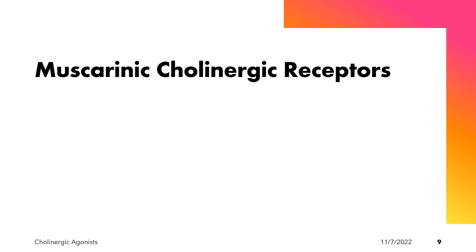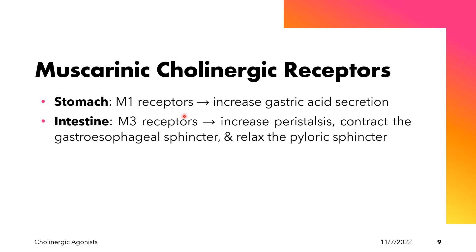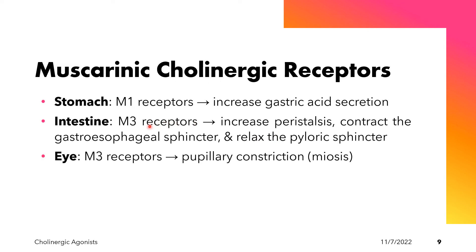For the stomach, there is increased gastric acid secretion via M1 receptors. For the intestine, there is increased peristalsis, contraction of the gastroesophageal sphincter, and relaxation of the pyloric sphincter through M3 receptors. For the eye, there is pupillary constriction, also known as miosis, through the M3 receptors.